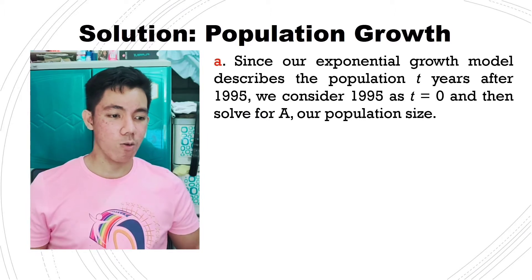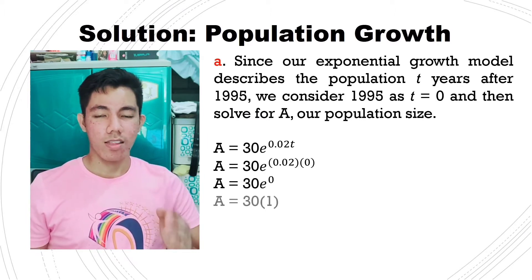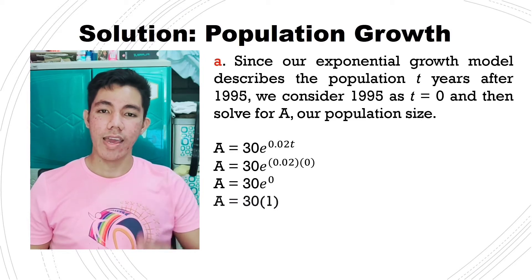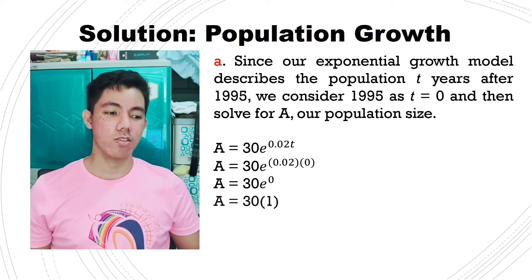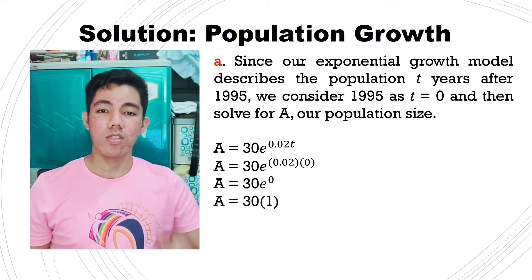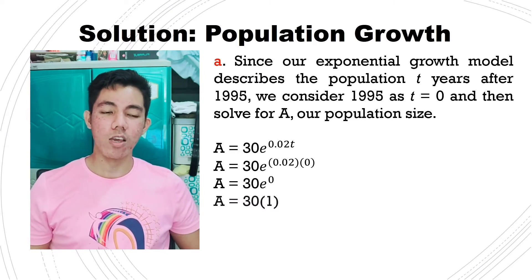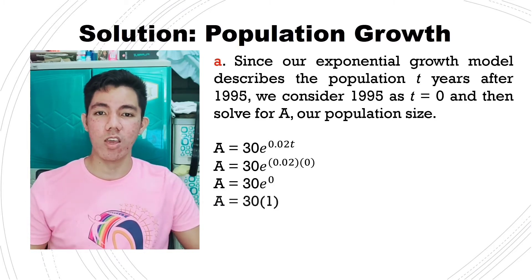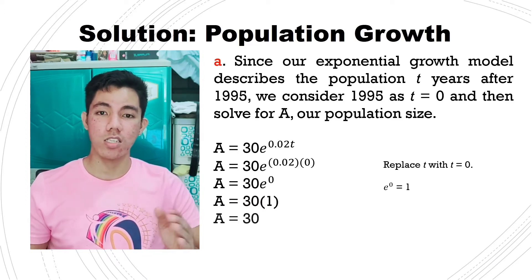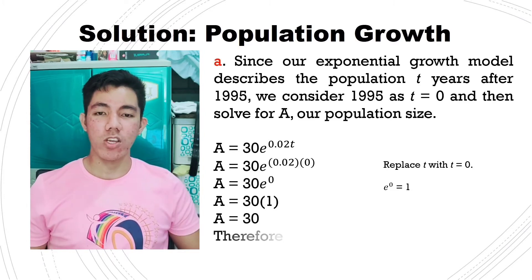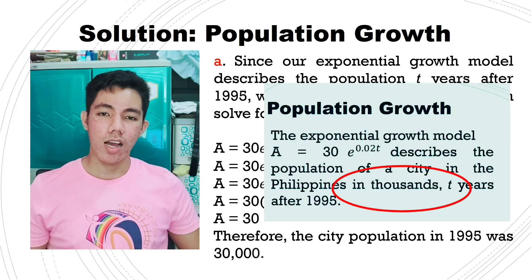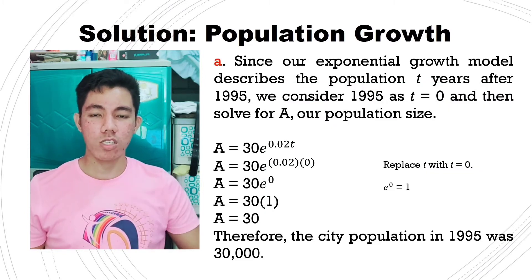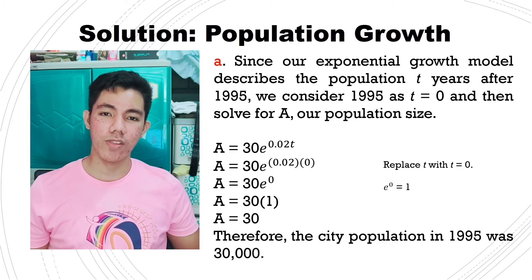So A equals to 30 times e raised to 0.02t. Then A equals to 30e raised to 0.02, substituting the given value of t which is equal to 0. Next, A equals to 30e raised to 0 — because 0.02 times 0 equals 0. And e raised to 0 is equivalent to 1, so 30 times 1 equals 30. Therefore, the city's population in 1995 was 30,000 — since the population is expressed in thousands, we multiply 30 by 1,000 to get 30,000.